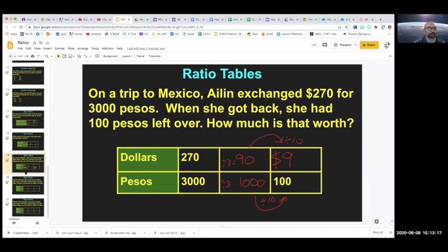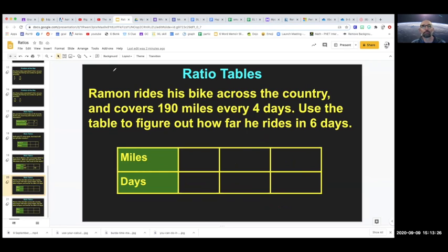Let's try the next one. So now, oh look, we have Ramon. Ramon rides his bike across the country and covers 190 miles every four days. Use the table to figure out how far he rides in six days. So first we look at what information do we have. Here we have miles and days, and here we have 190 miles, so I'm going to put 190 here, every four days. And what do we want to find out? Use the table to figure out how far he rides in six days. So this is what we want to find out. In six days, how many miles does he go?